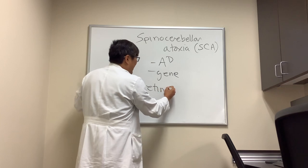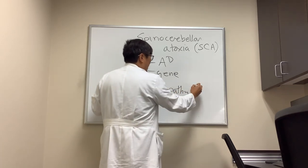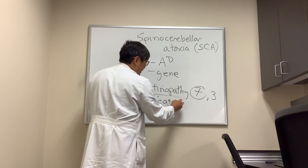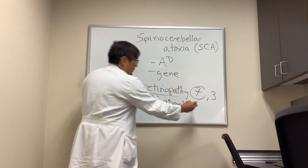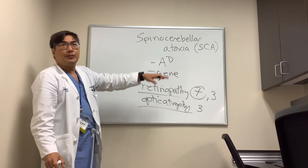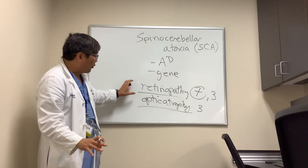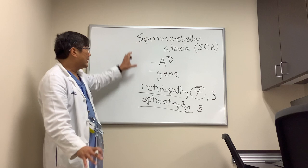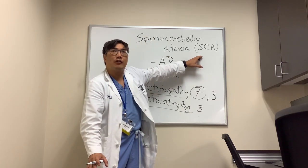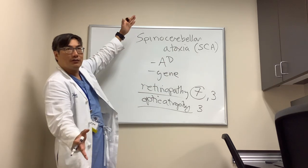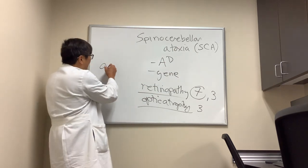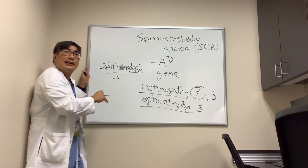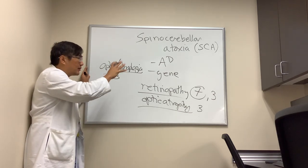Those ophthalmologic findings include retinopathy — a pigmentary retinopathy — which can be seen in SCA7, but also in SCA3. Optic atrophy can be seen variably in a number of SCAs, including SCA2, 3, and 4. Ophthalmoplegia is also important and can be seen particularly in SCA3, but also in SCA4 and SCA6. The specific numbers matter less than understanding how these findings help the neurologist determine which SCA they're dealing with clinically and direct testing toward the most likely candidate.